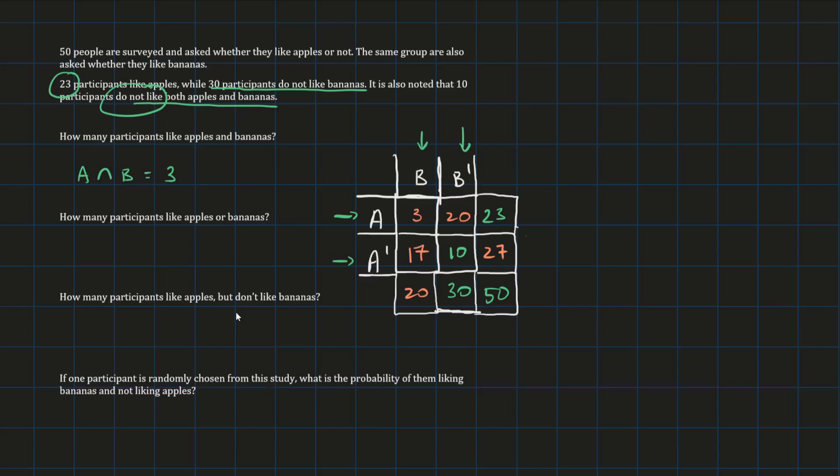How many participants like apples or bananas? So the or is implying that we should use the union. So we're calculating A union B. Now, this is something that we can't read directly off the table, but we can use the values in the table to calculate this. It's actually a formula to calculate the union. It's called the addition rule. And it's equal to the individual elements added together, or the counts of them in this case, number of participants added together, minus the intersection. So this is called the addition rule.